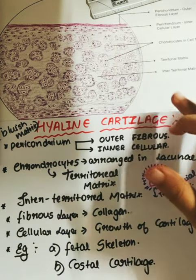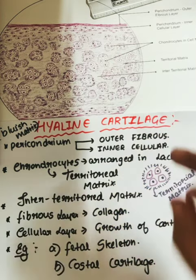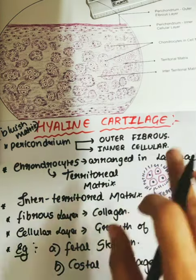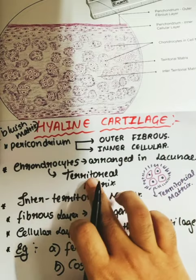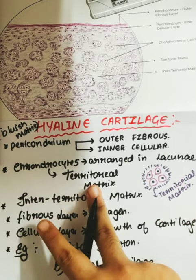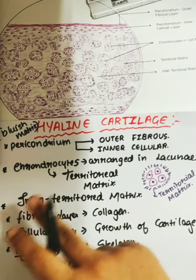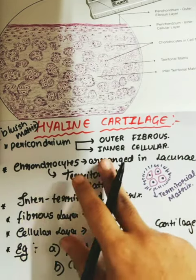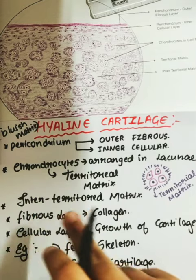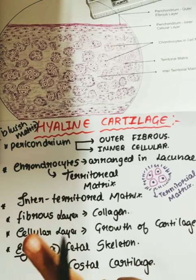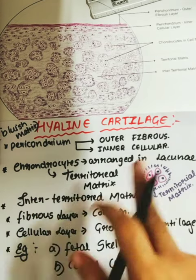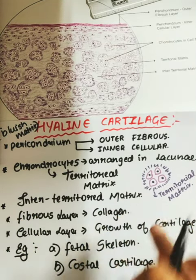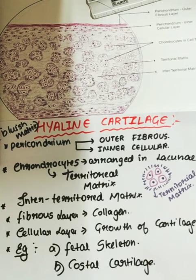In summary: perichondrium has an outer fibrous perichondrium and an inner cellular perichondrium. Chondrocytes are arranged in lacunae and surrounded by territorial matrix. Between the two territorial matrices, you can see the inter-territorial matrix. The fibrous layer is made up of collagen, and the cellular layer helps for growth of cartilage. Examples include fetal skeleton and costal cartilage.